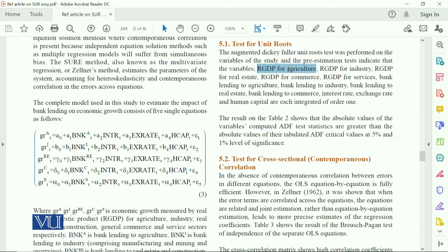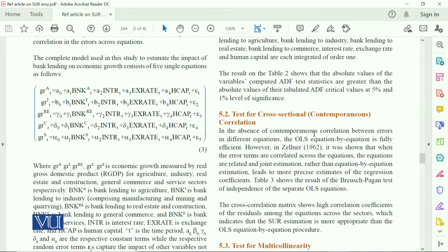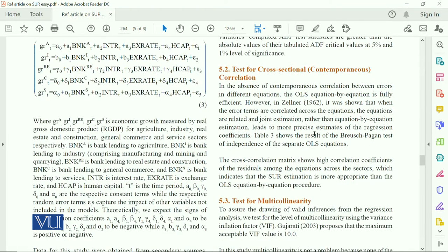And in that you have the idea of real GDP for agriculture, real GDP for industry, and all the 5 sectors. The result on table 2 shows absolute value of the variable computed ADF test greater than 1. And on that basis, this decision is made whether the variable is I(0), integrated of order 0, or integrated of order 1, or integrated of order 2. ADF will tell you.